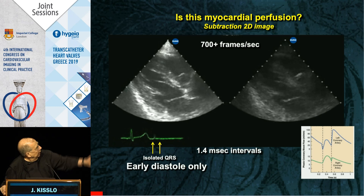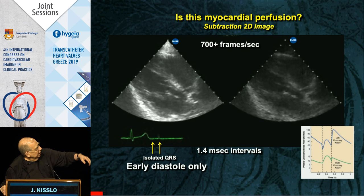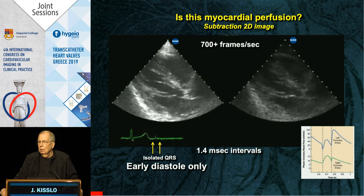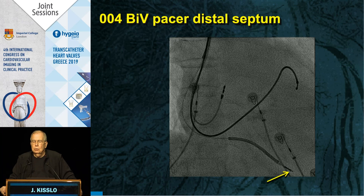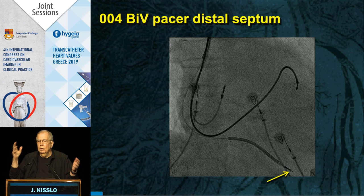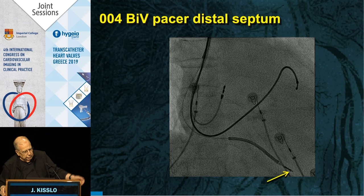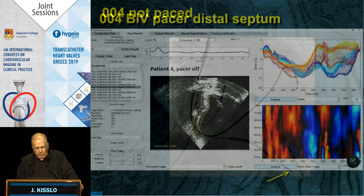At very high speed, on the left are subtraction images and on the right, selected for diastole, you see the septum light up — this is coronary perfusion. We'll be able to image perfusion. It gets even more complex trying to image coronary flow. Here a pacemaker tip is inserted in the right ventricle near the apex, and with high-speed strain mapping we can see what moves first.